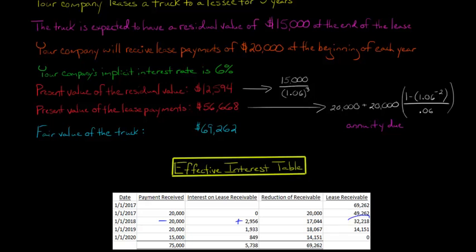We repeat the process: $32,218 multiplied by 0.06 gives us interest of $1,933. We also received a payment of $20,000, so the net change is $18,067, bringing us to a balance of $14,151. You might wonder about the $15,000 residual — technically it isn't a cash payment, but we treat it as one because it reflects the lessor receiving the asset back. The truck is being returned, so we assume it has the residual value of $15,000.